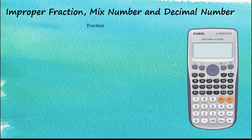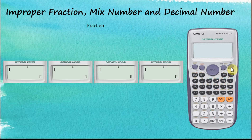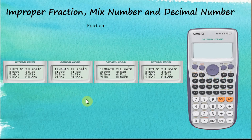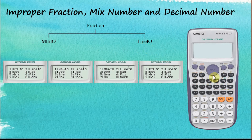In this video we are going to discuss conversions between improper fractions, mixed numbers, and decimal numbers. In a previous video we learned that there are two types of input/output. Let's go to Shift Setup — the two types of input/output are the MathIO and the Linear IO. In short, we have two methods to input fractions: the Math I/O and the Linear I/O.